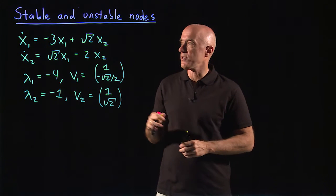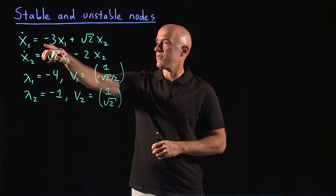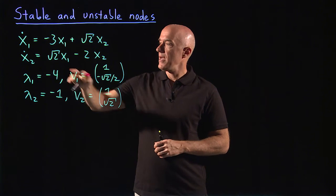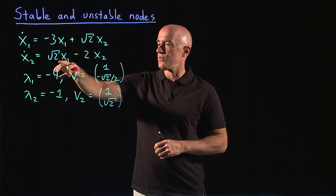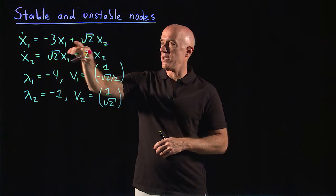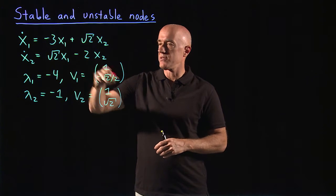We're looking at the differential equations x1 dot equals minus 3x1 plus root 2x2, and x2 dot equals root 2x1 minus 2x2. So the matrix is minus 3 root 2, root 2 minus 2.